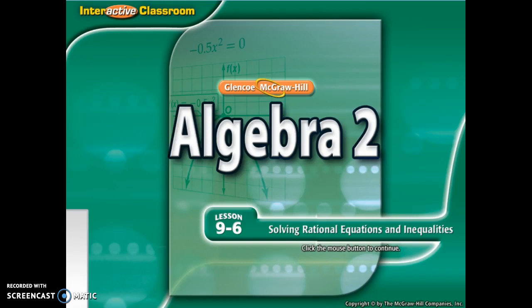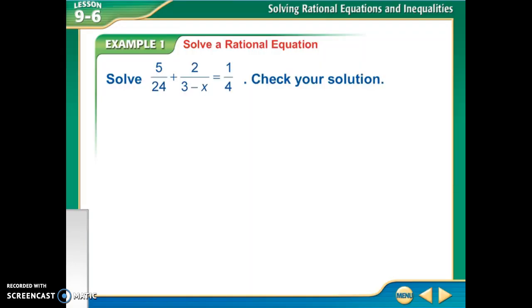Now that we've simplified all of our rational expressions by simplifying fractions, multiplying, dividing, adding, and subtracting, we're going to use all of that to actually solve these rational expressions and get answers for x. To start with, I want to solve this equation that's got an addition on this side and it's set equal to 1 fourth.